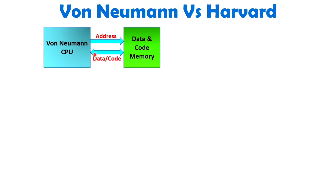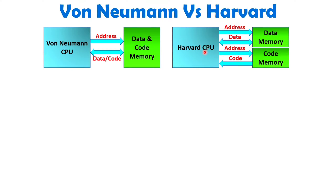But when you access data, you may be reading from memory as well as writing into the memory. So bi-directional data access is shown here. When we talk about Harvard architecture, you will observe that for data and for code, we have separate memories.